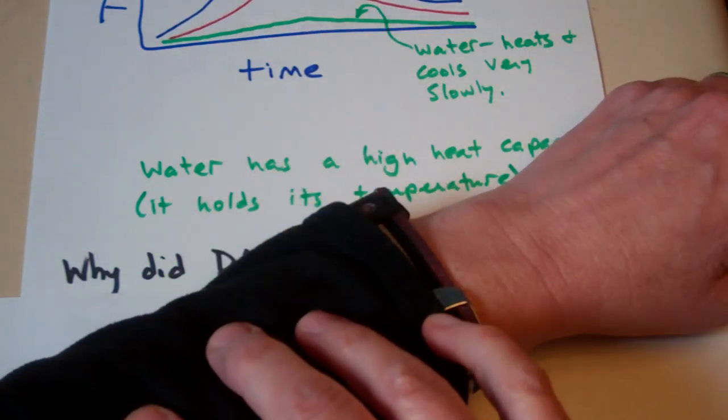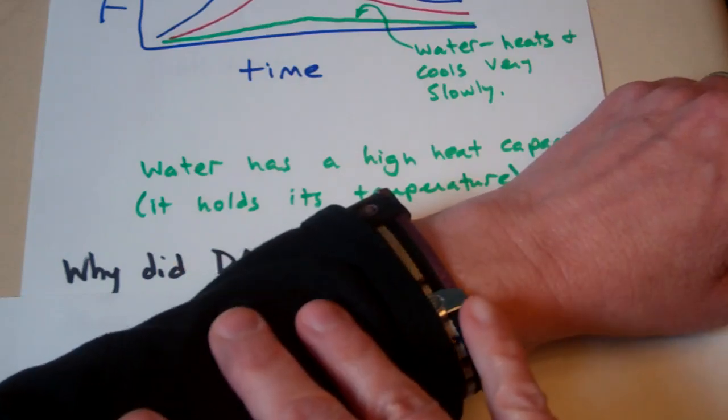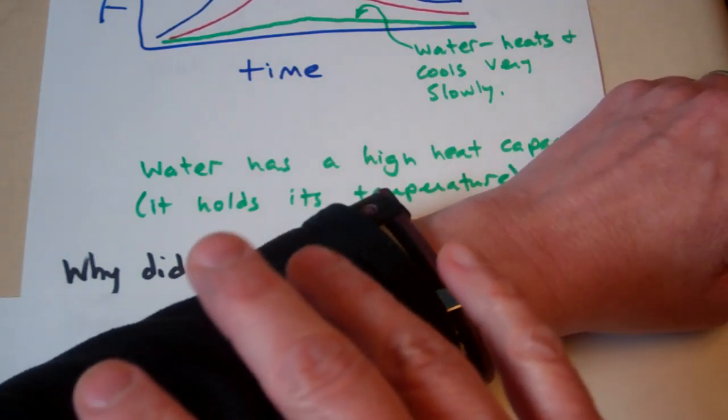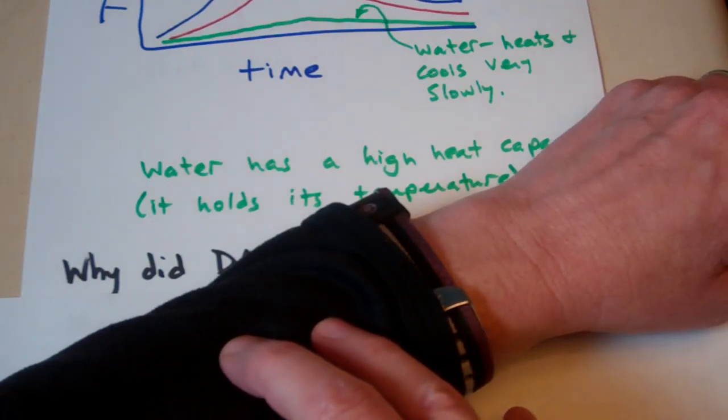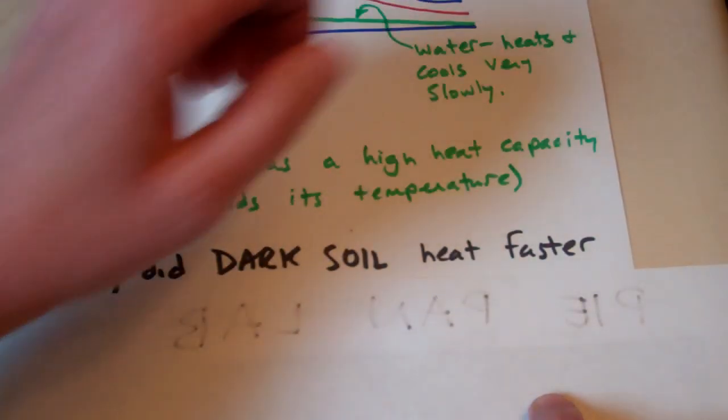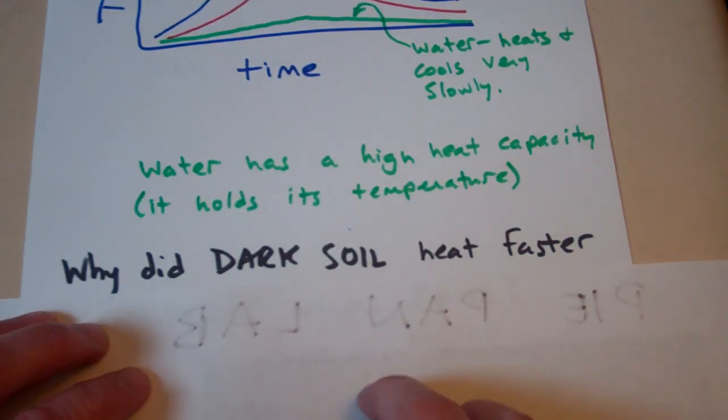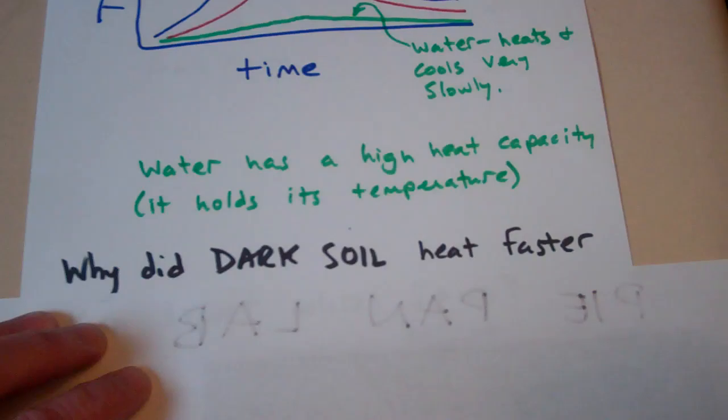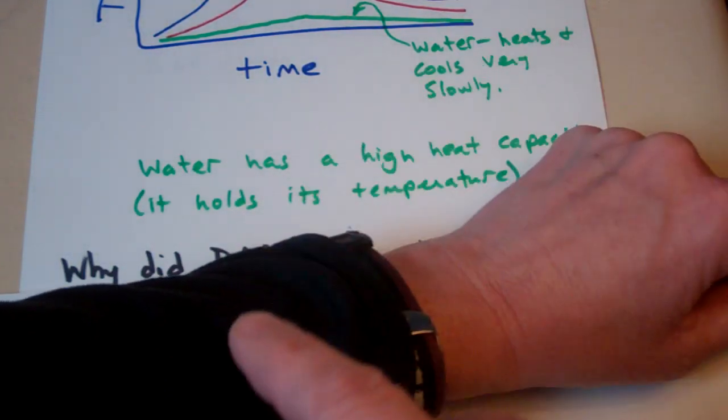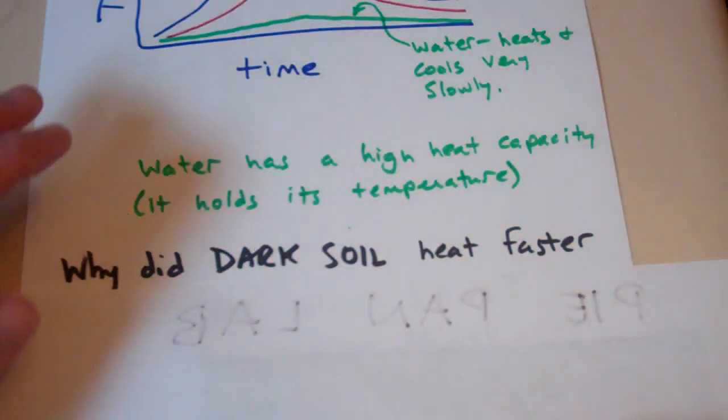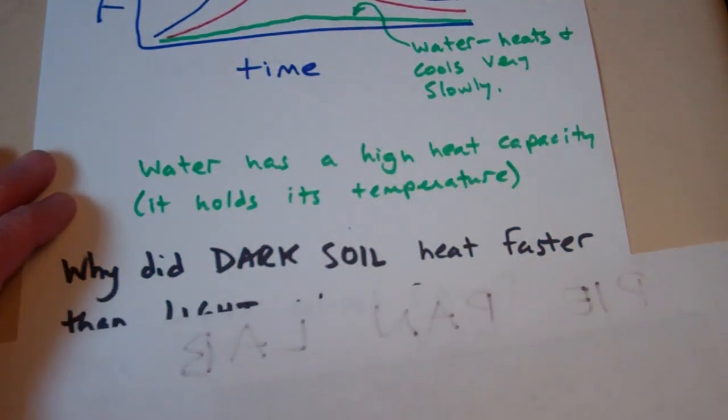Meaning all of the energy is being absorbed by the dye in this shirt. Black colors absorb all of the visible light colors. If I were wearing a white shirt, like the white of this piece of paper, the light strikes it and then bounces back. So if the light energy is bouncing back, it's not going to heat up very much. But if the light energy is being absorbed into something, that's going to heat it up. So that's why our dark soil heated up faster.